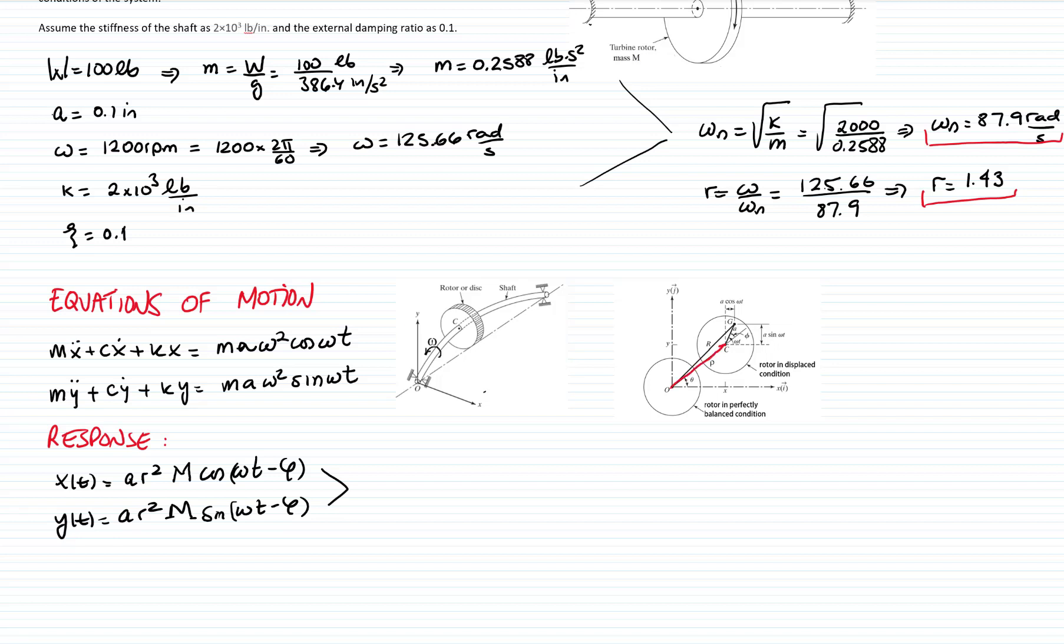If I take this two x and y, and by using Pythagoras, I can get the deflection of the shaft, which I will call ρ. I can say that ρ equals the square root of x² plus y². And that will give me a value for the deflection of the shaft of a r² M, with M being the magnification factor, equals to 1 over square root of (1 - r²)², plus 2ζr².